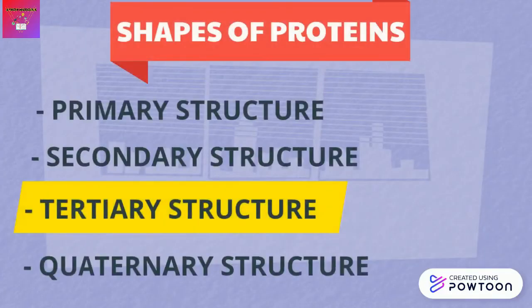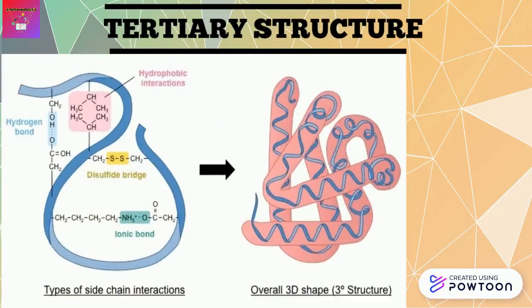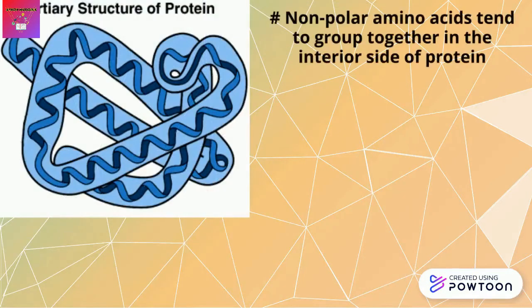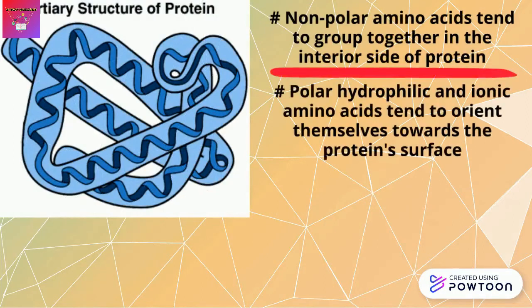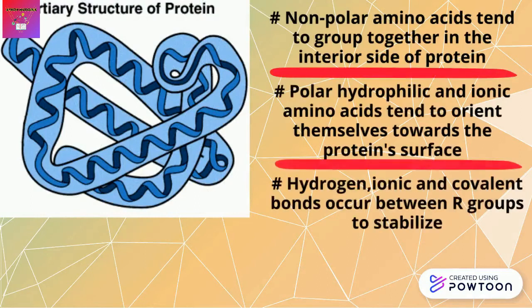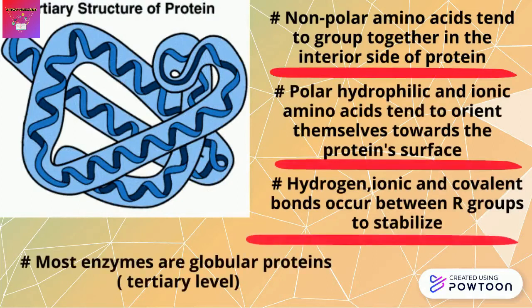In the tertiary structure, polypeptide chains start to show three-dimensional shapes. Polypeptides tend to ball up into globular structures. This occurs mainly because non-polar amino acids in the polypeptide tend to group together in the interior of the protein, away from the watery environment, while polar hydrophilic and ionic amino acids tend to orient themselves towards the protein surface where they are near the water. The interaction of hydrogen, ionic, and covalent bonds between the R groups in the polypeptide chain stabilizes the protein structure. Most enzymes are examples of globular or tertiary level proteins.